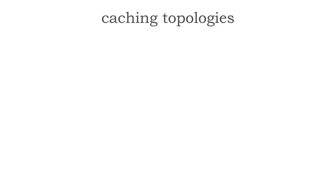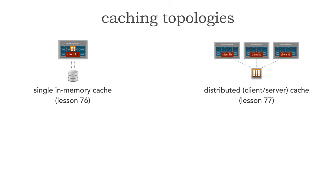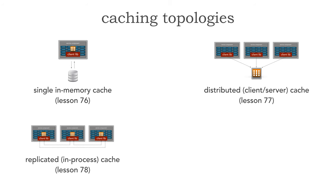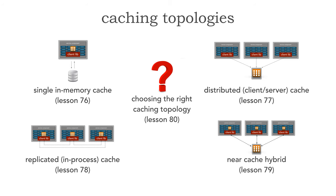In our journey so far, in lesson 76 we saw the use of a single in-memory cache. We also saw in lesson 77 a distributed cache or client-server cache. We also have replicated in-process caching and also a near-cache hybrid. In lesson 80 I'm going to wrap all this together and look at some criteria for how we can choose the right type of caching technology or topology.